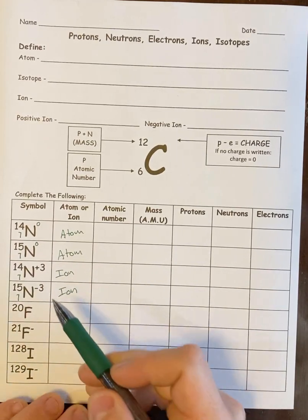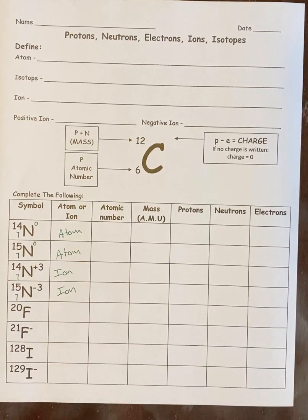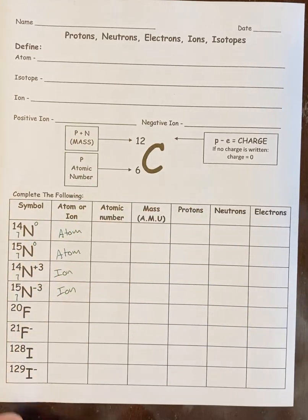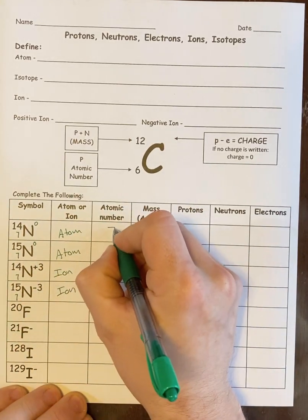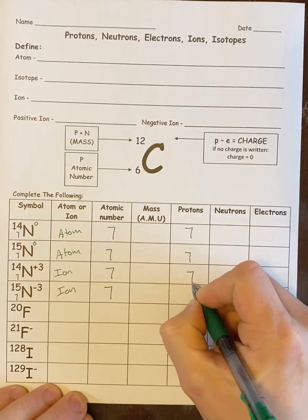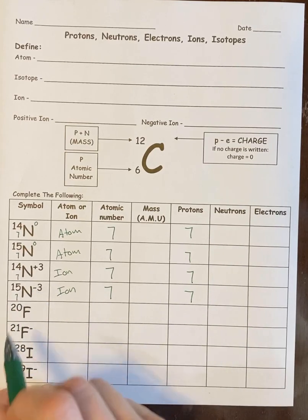These next two are ions because they do have charge. Specifically, you could say cation and anion, but whatever. Atomic number is the proton number, and it's in the bottom left-hand corner. So atomic numbers should be easy. Since they're all nitrogen, they're all going to have atomic number 7, and therefore 7 protons. Their mass number is written in for you, top left-hand corner.